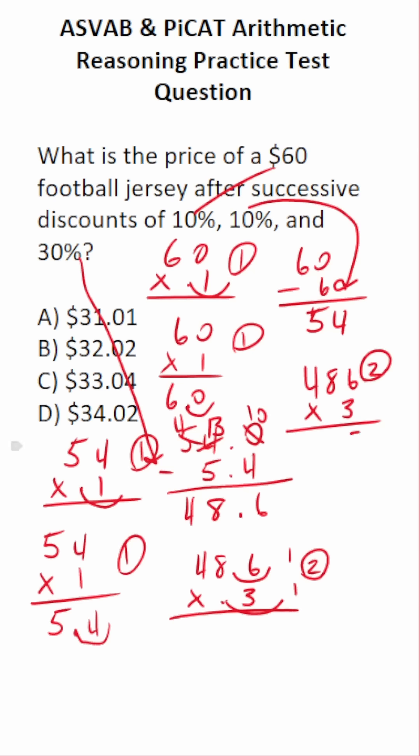6 times 3 is 18, carry a 1. 8 times 3 is 24, 25, carry a 2. 4 times 3 is 12, 13, 14. Bring our two decimals back in. So a 30% discount on 48.6 is $14.58.